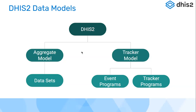Then we have the tracker model, which has two components: event programs and tracker programs. Event programs are essentially line-listing registers where you record one specific event without tracking it over time. Basic examples include a birth registration program, a death registration program, or any vital event — births, deaths, marriages — where you make a record and store it as electronic information in your system.